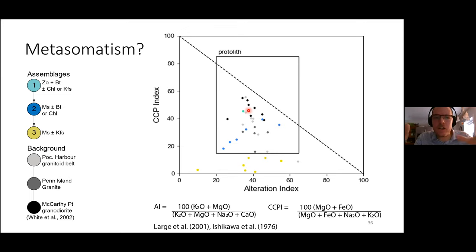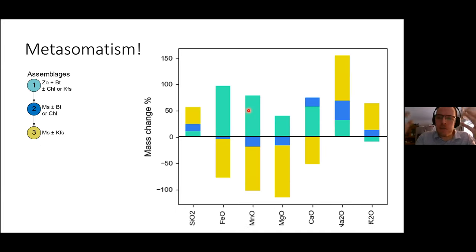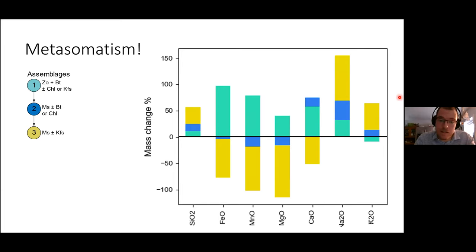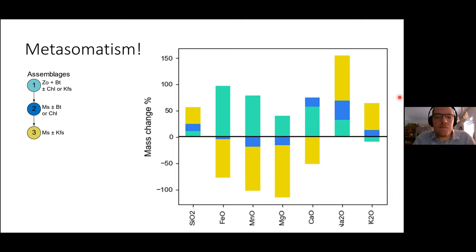Having addressed the closure problem with weight-percent data, we want to quantify the mass change related to that hydrothermal alteration. Using aluminium and titanium as reference immobile elements, the specimens with a muscovite-potassium feldspar assemblage were enriched in sodium and potassium by at least 50%, and in silicon, while being depleted in iron, magnesium, manganese, and calcium. These changes are significant — more than the two weight percent uncertainty associated with the micro-XRF method.